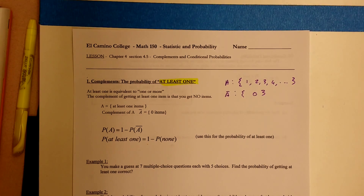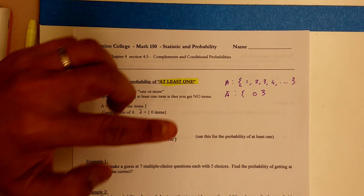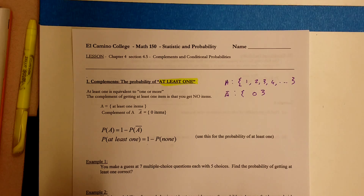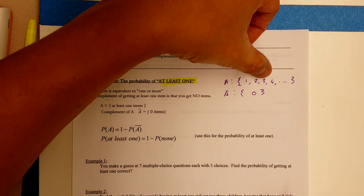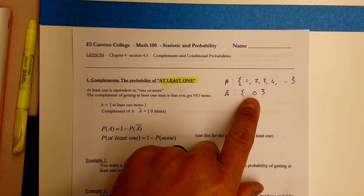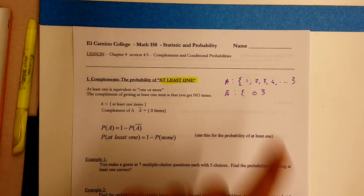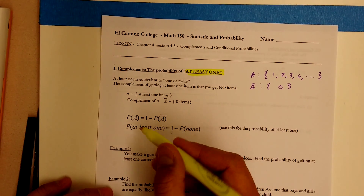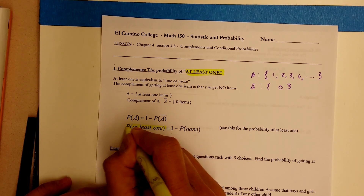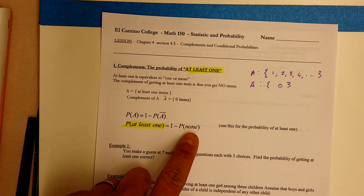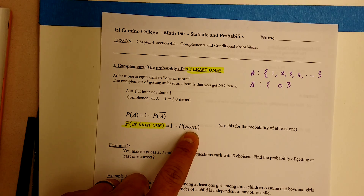You might wonder, what about negative numbers? You're right, negative numbers are also technically the complement of at least one. But when we're talking about objects — like at least one cell phone or at least one calculator — it makes no sense to say negative calculators, and that's why we don't include them. So to find the probability of at least one, you take one minus the probability of zero, or none, items.